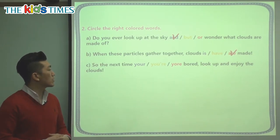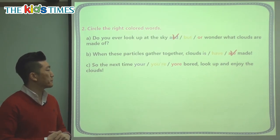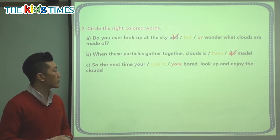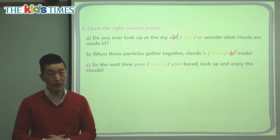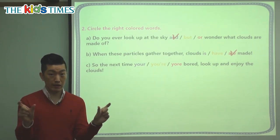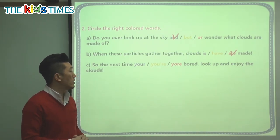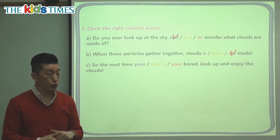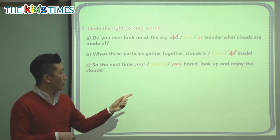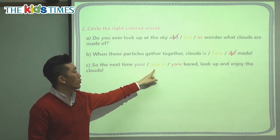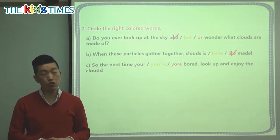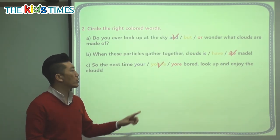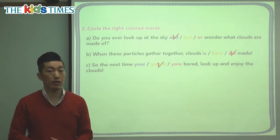And the last one: the next time you're bored — you're bored — or you're bored — look up and enjoy the clouds. A lot of students get confused here. Whenever there's an apostrophe, look at it like two different words. You're means you are. So whenever you are bored, look up and enjoy the clouds. The correct choice is you're bored.